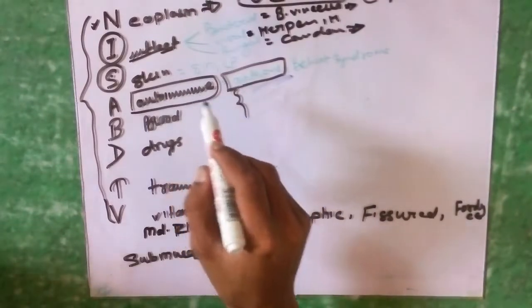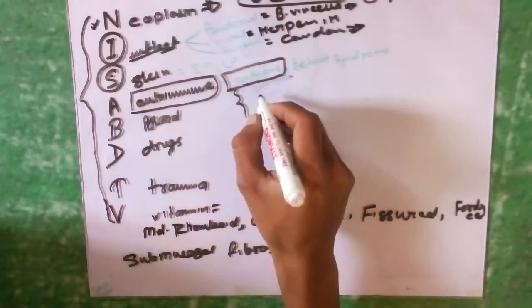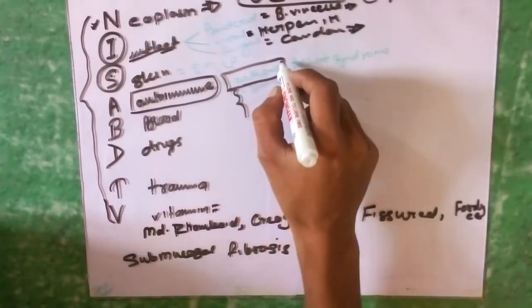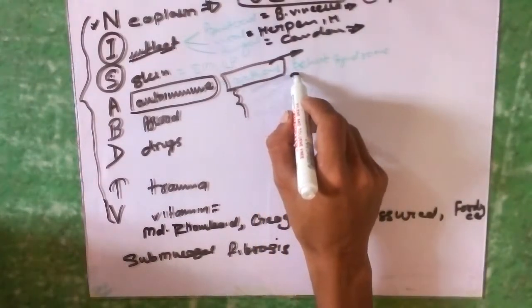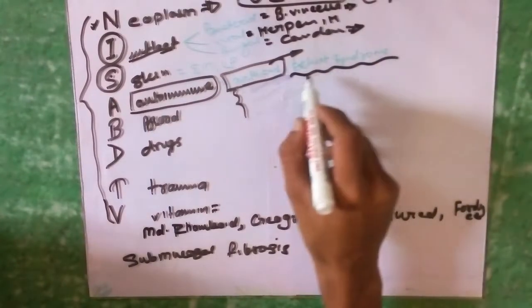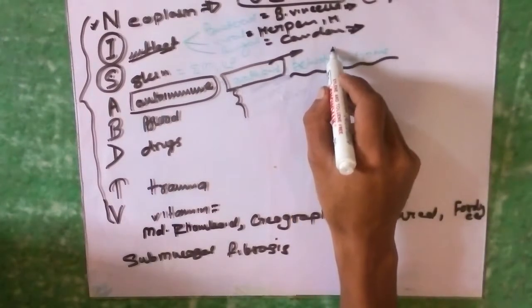The cause can be either infection or vitamin deficiency that can cause aphthous ulcer. There is a small autoimmune disease syndrome known as Behcet's syndrome.